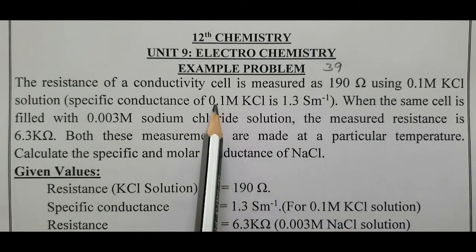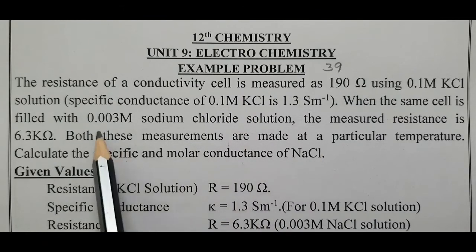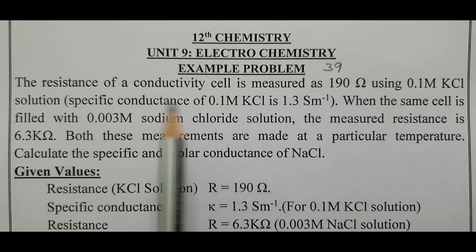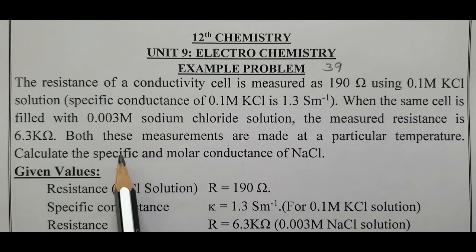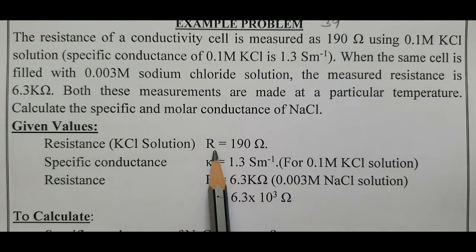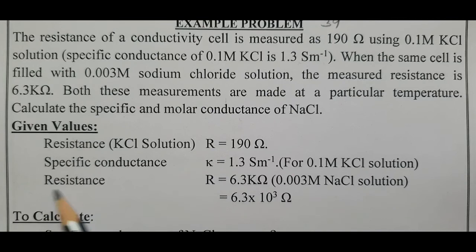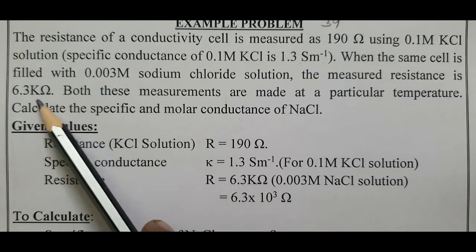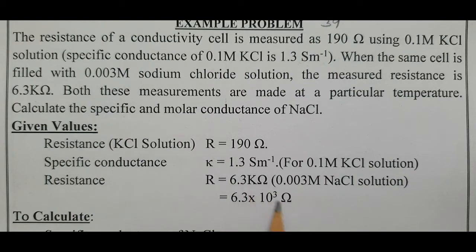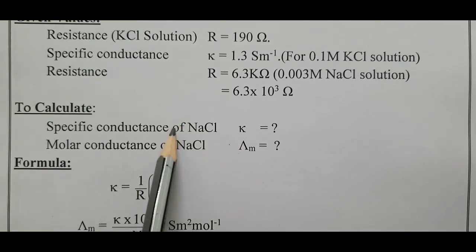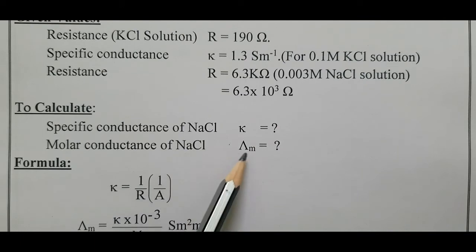Two solutions are given: potassium chloride with a molarity of 0.1 molar, and sodium chloride with a molarity of 0.003 molar. Using the KCl solution, we first calculate the cell constant (L/A). Then using that cell constant, we calculate κ for NaCl. Finally, from κ we calculate molar conductance. The given values are: R for KCl = 190 ohm, κ for KCl = 1.3 S m⁻¹, and R for NaCl = 6.3 kilo ohm = 6.3 × 10³ ohm. We need to find κ and Λ_M for NaCl.